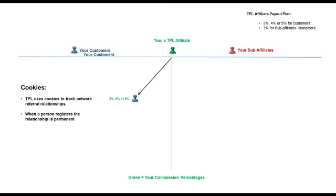It would be terribly unfair to remove a person from the official referrer's network, who spent time, and in many cases money, attracting that initial click through. As an affiliate, when the lottery goes live and you yourself are signing up customers, there will always be those customers that have clicked through your banner and your link and registered, but later decide that they would rather be in someone else's network. In many cases, they may not even remember clicking through on your banner in the first place. Regardless of this, we will not alter the relationship, and that person, however unhappy, will remain as your customer for as long as you both remain members of the Players' Lottery.